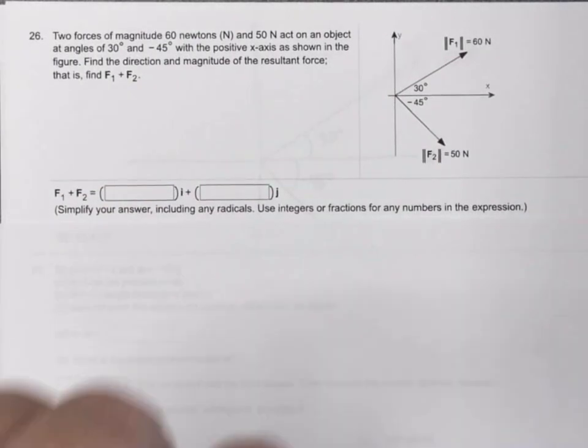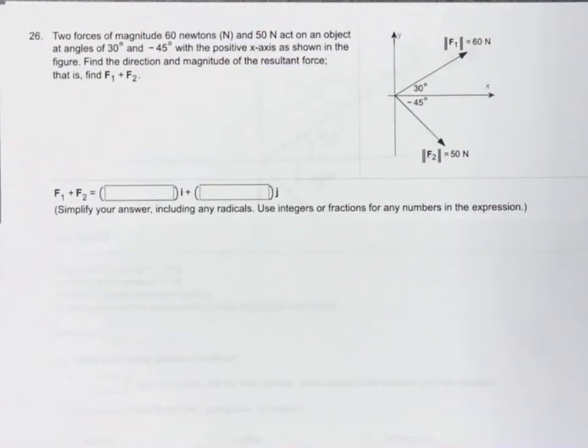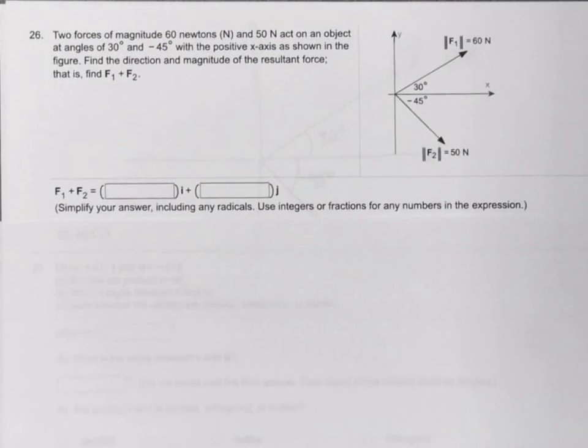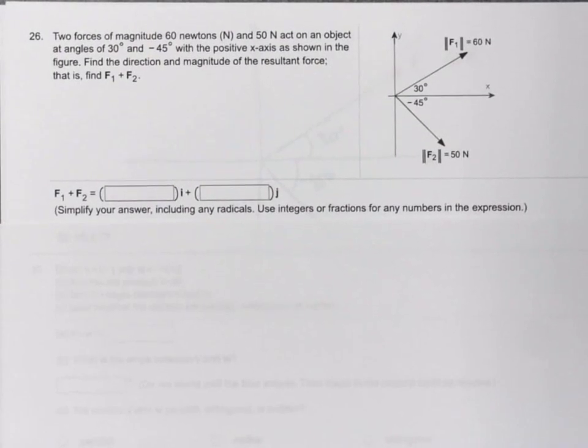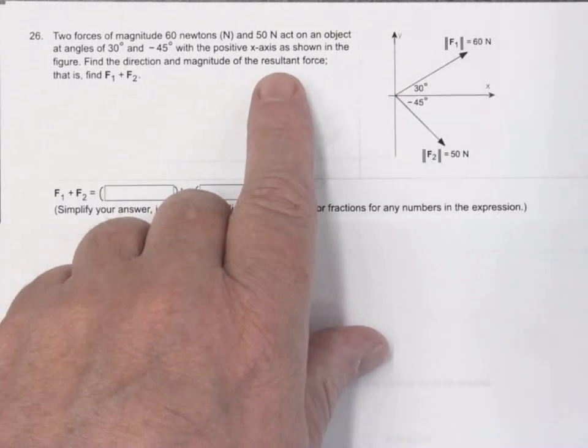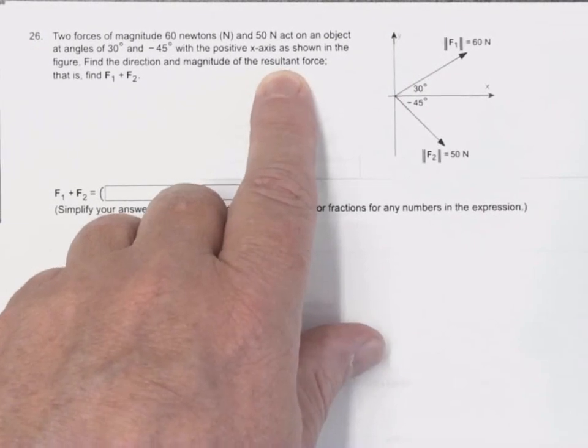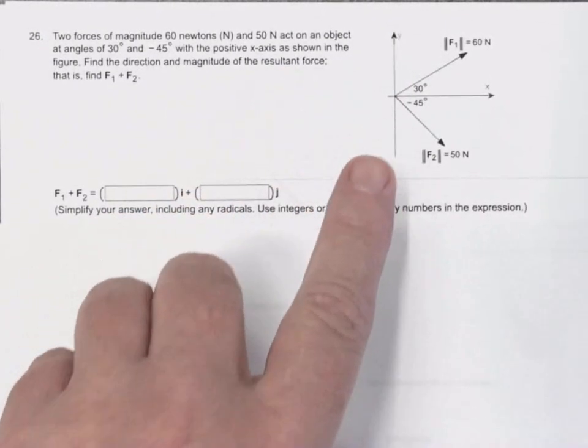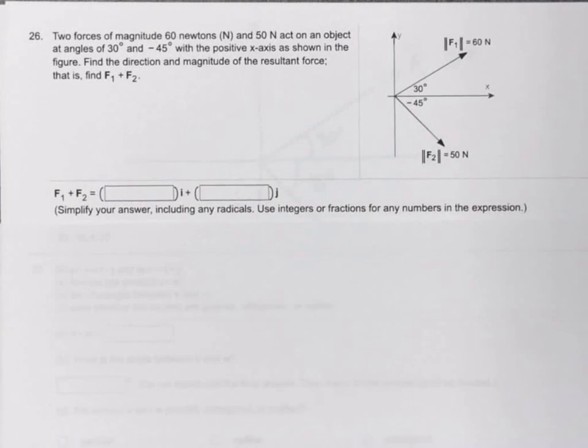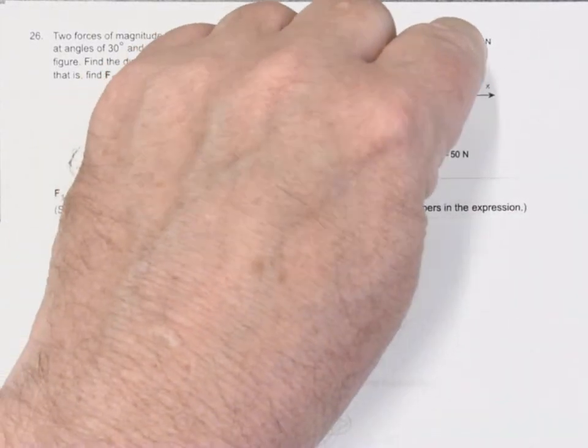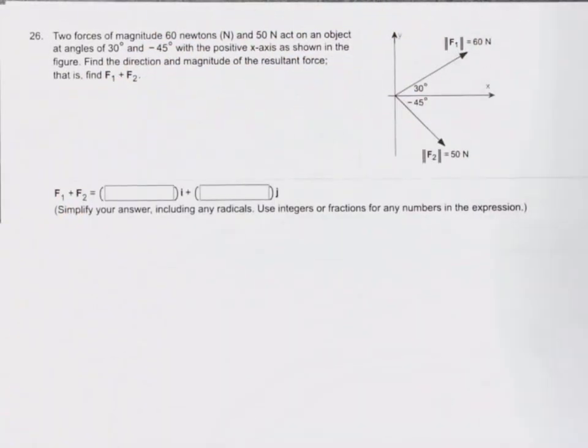So the question is, since both these forces are pushing on the object at the same time, what is the result? A lot of times they call that the resultant vector. You can see here the resultant force. So really, this is a problem of adding two vectors together.